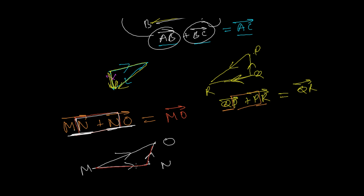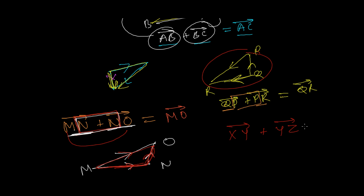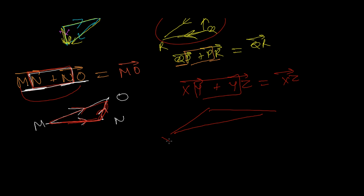These two sides are taken in order, representing vectors MN and NO. The third side taken in opposite order, MO, represents the sum of these two vectors. If you want to make a graph that's better, or if not, just remove the middle letter to get MO. Similarly, XY + YZ: remove the Y's and you get XZ. In triangle XYZ, XY represents one side, YZ the next, and the third side XZ in opposite order represents the resultant.